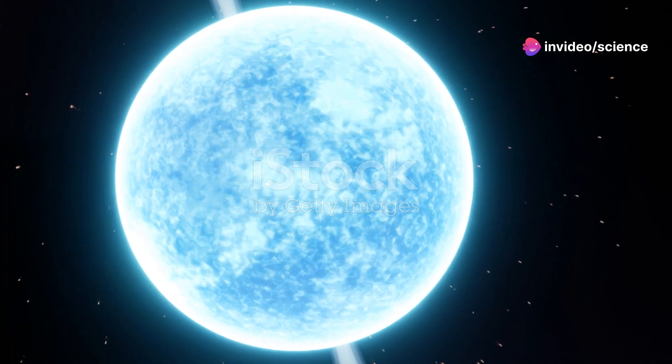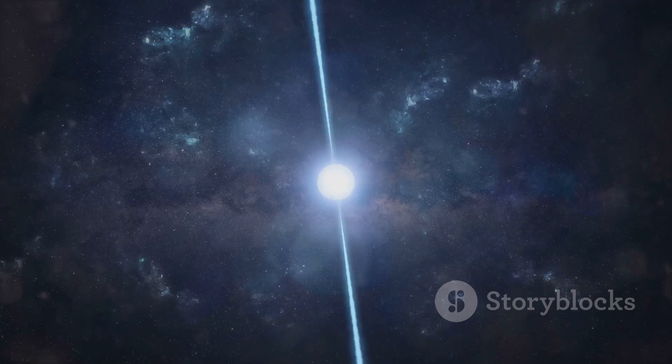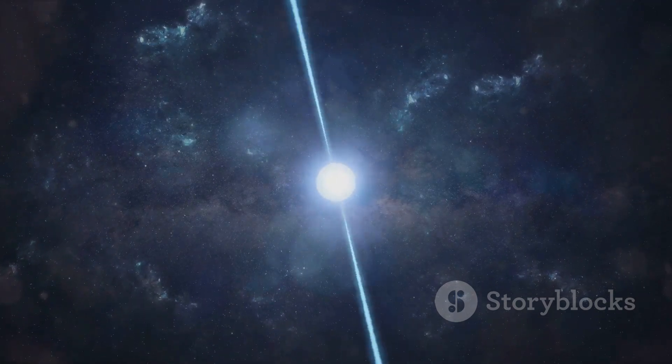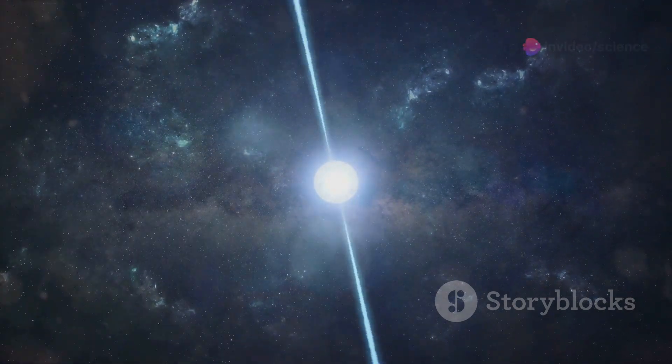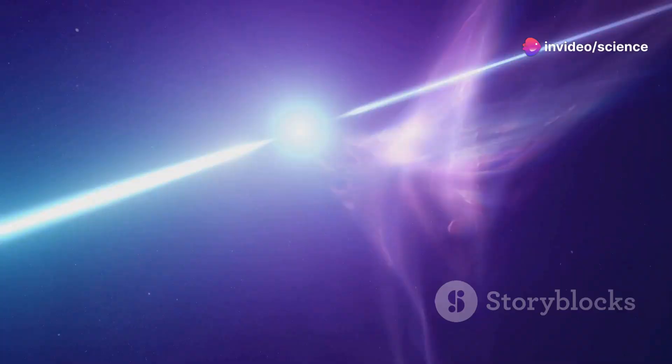But what are they exactly and how do they come to be? Let's start with neutron stars. Born from the fiery death of a massive star, a neutron star emerges when the star's core collapses under its own gravity, compressing its particles into a super-dense sphere just about 12 miles in diameter.